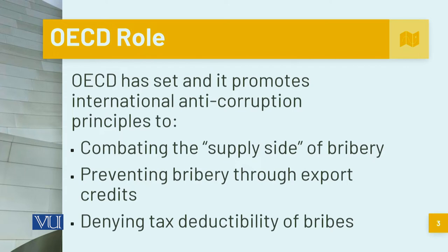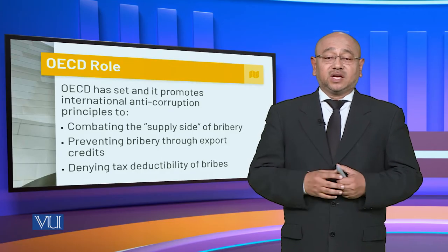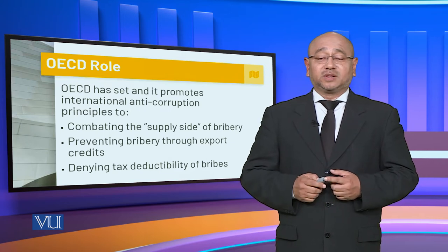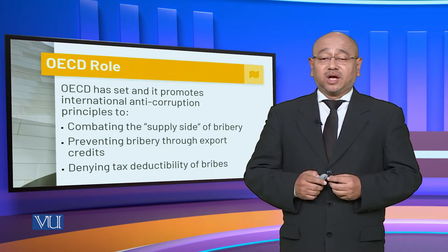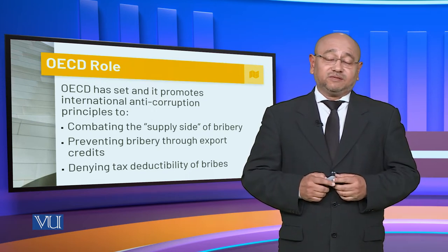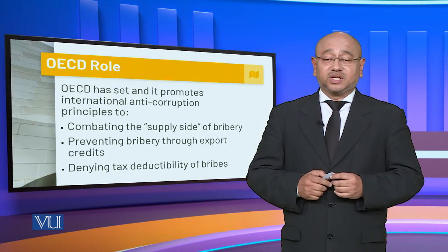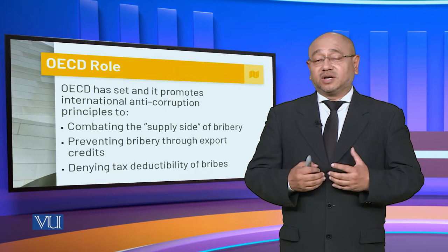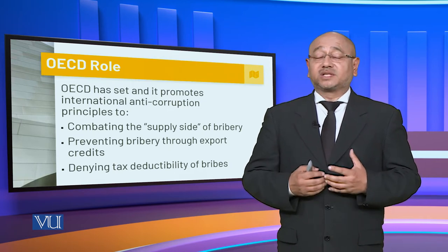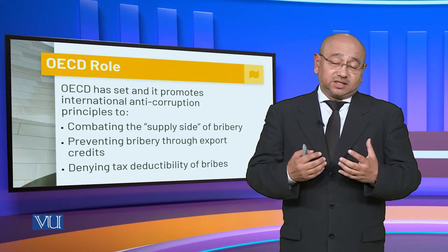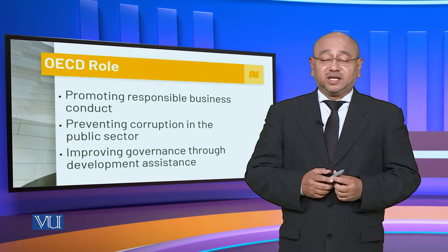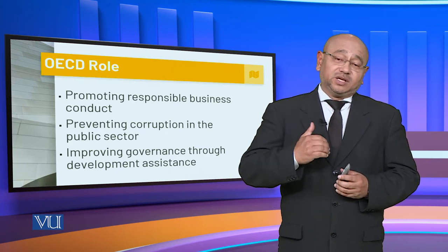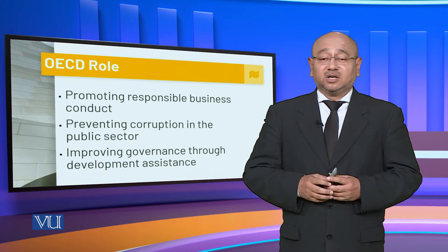OECD promotes international anti-corruption principles to combat the supply side of bribery, preventing bribery through export credits and denying tax deductibility of bribes. They are very specialized in curbing corruption in areas where underdeveloped countries' national governments cannot make an impact. OECD has many accolades and is trying to curb corruption at multiple levels.